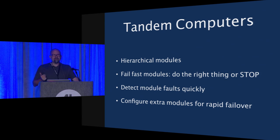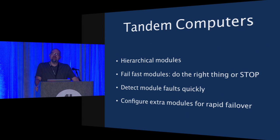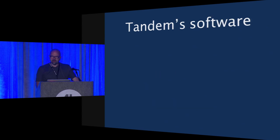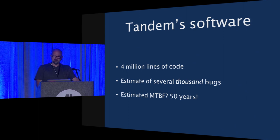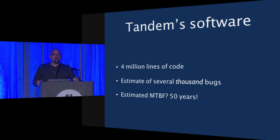You need to detect module faults quickly and have additional superfluous hardware ready for rapid failover. Based on his analysis of customer logs, Jim Gray said their computers had a mean time between failure of decades. They also followed a similar approach with software — processes that failed fast, with other processes ready to take over. With roughly four million lines of code and several thousand bugs still remaining, he estimated 50 years between failures of their operating system. Can you imagine today Microsoft or Apple writing an OS that would run for 50 years between failures? It's inconceivable, but they know how to do this.